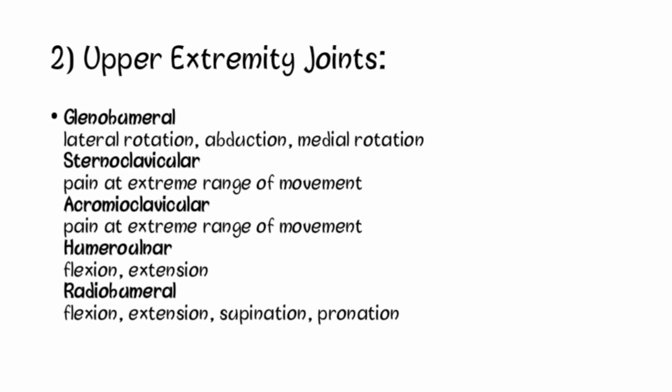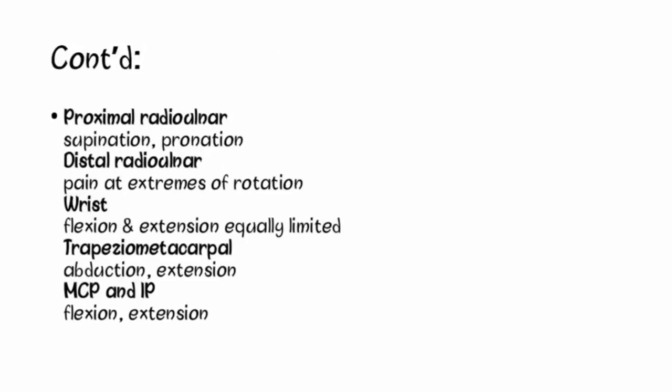For upper extremity joints: at the glenohumeral joint, lateral (external) rotation is more limited than abduction, and abduction is more limited than medial (internal) rotation. At the sternoclavicular joint, there is pain at extreme range of motion. At the acromioclavicular joint, pain is also at the extreme range of motion. At the humeral-ulnar joint, flexion is more limited than extension. At the radio-humeral joint, flexion is more limited than extension, extension more limited than supination, and the least limited is pronation.